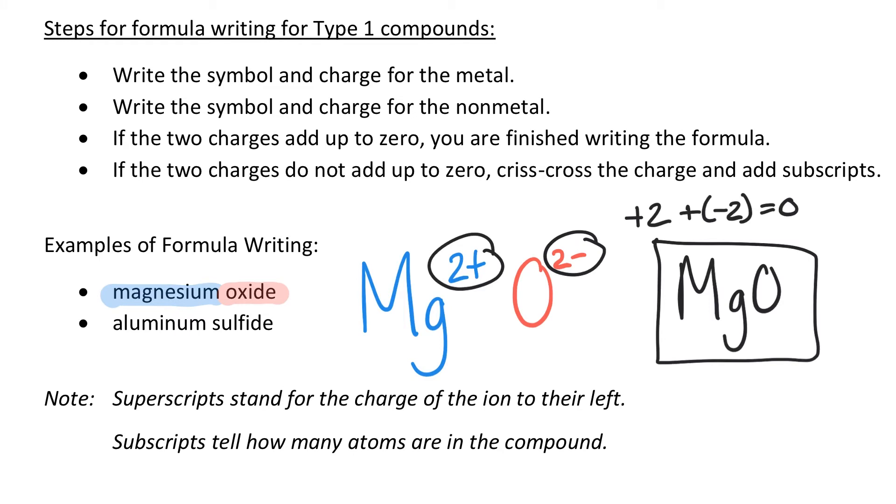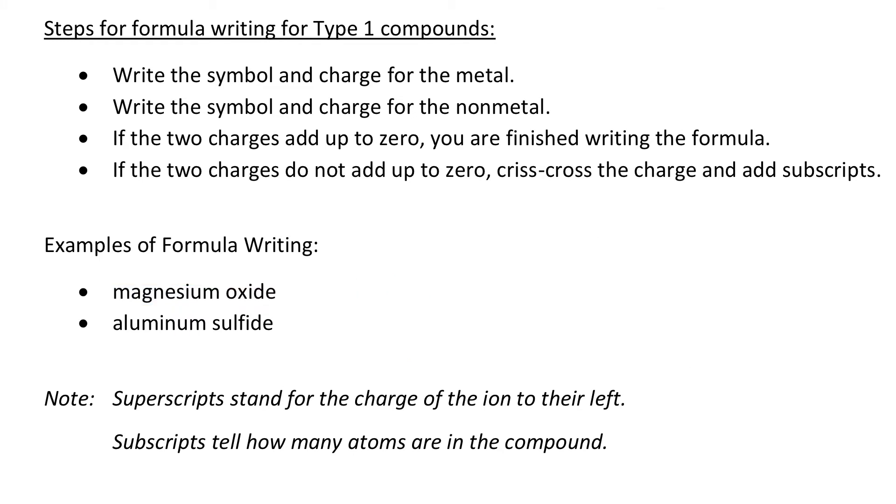For the second example though, we're asked to look and write the formula for aluminum sulfide. So let's again start with that. Let's look first at the metal here being aluminum. It's found to the left of the staircase. For the very first step we do, write the symbol and charge for the metal.